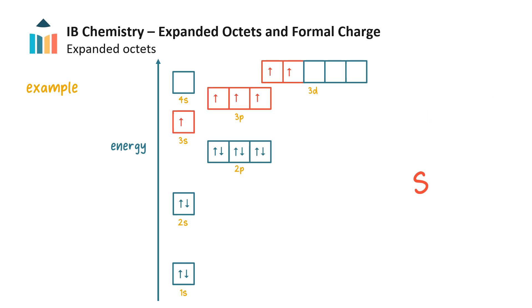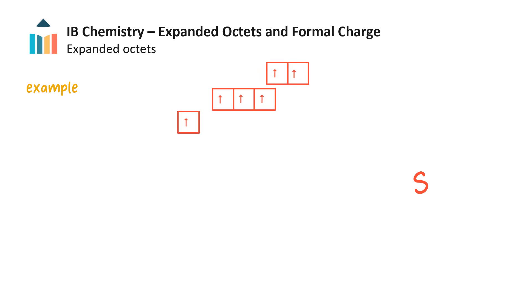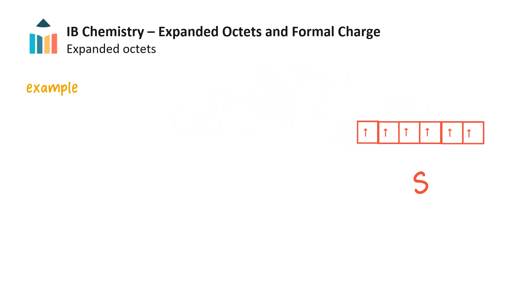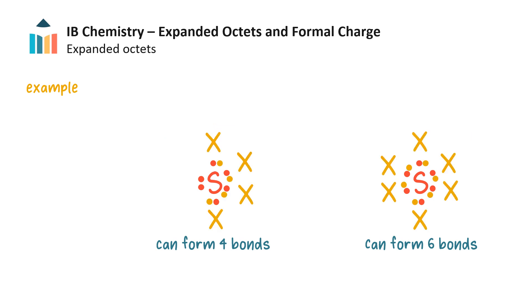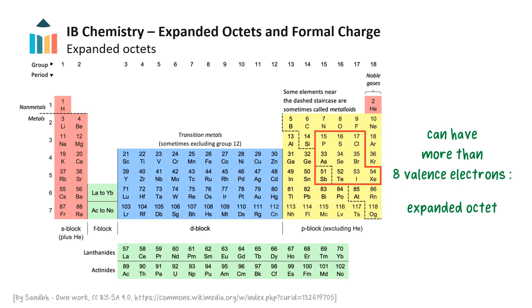This is an oversimplification, but we can use this model to understand how sulfur can now potentially form 6 electron pairs when it bonds, or 4 bonds if 2 of sulfur's electrons form a lone pair. Either way, after bonding, sulfur has an expanded octet. So sulfur and the other atoms which can form expanded octets can therefore have 5 or even 6 electron domains.